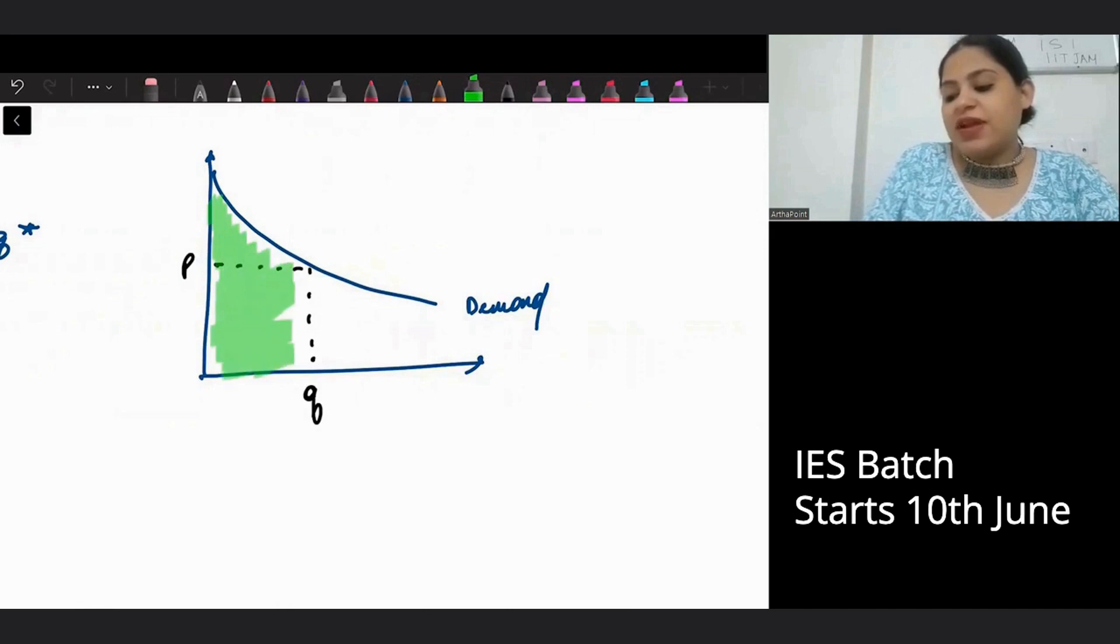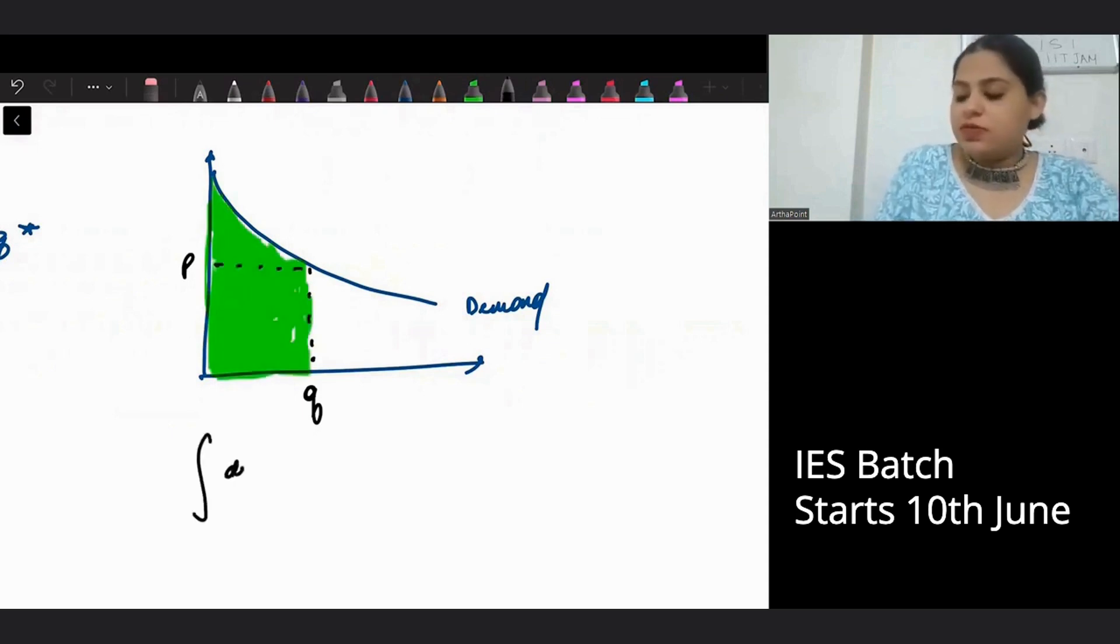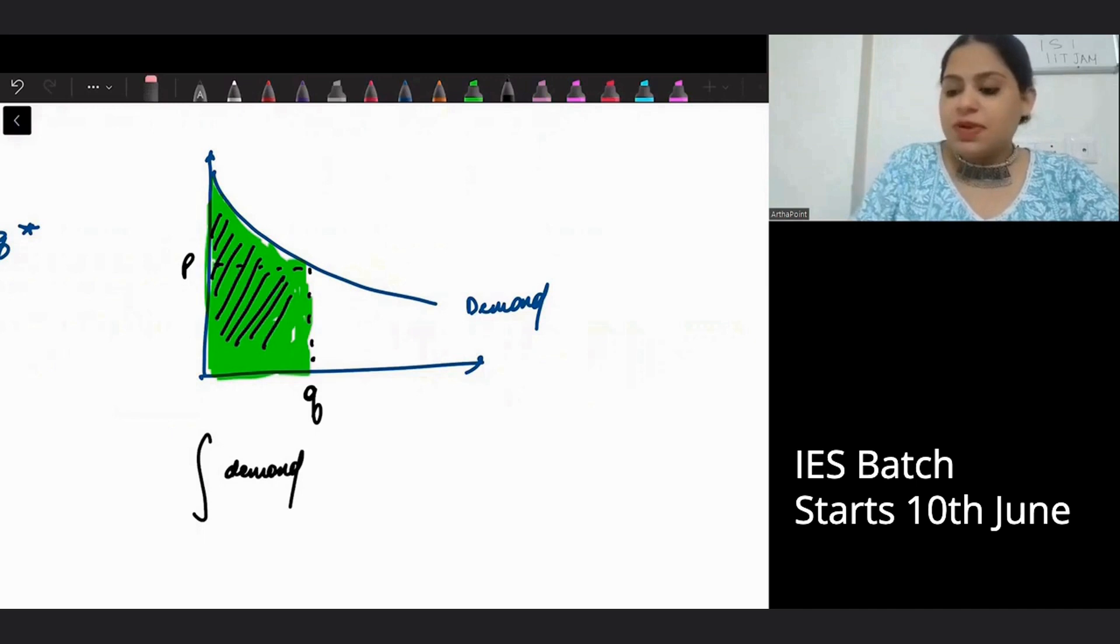I can shade area. If I integrate this curve, I will get area under the curve. So when I integrate the demand curve, I will get area under the curve. For consumer surplus, I only need this much.